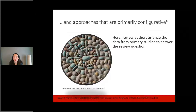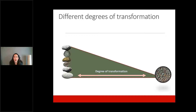We can have approaches that are more aggregative, where review authors add up the data from primary studies to answer a review question, or more configurative, where authors arrange the data to answer their question. In a qualitative evidence synthesis we have different degrees of transformation — findings could clearly describe each finding from the primary research, or you could try to come up with something to explain findings from across multiple studies. The degree of transformation is influenced by the synthesis method, the review team's knowledge of the field, the purpose of the synthesis, and the reviewers' background and experience.